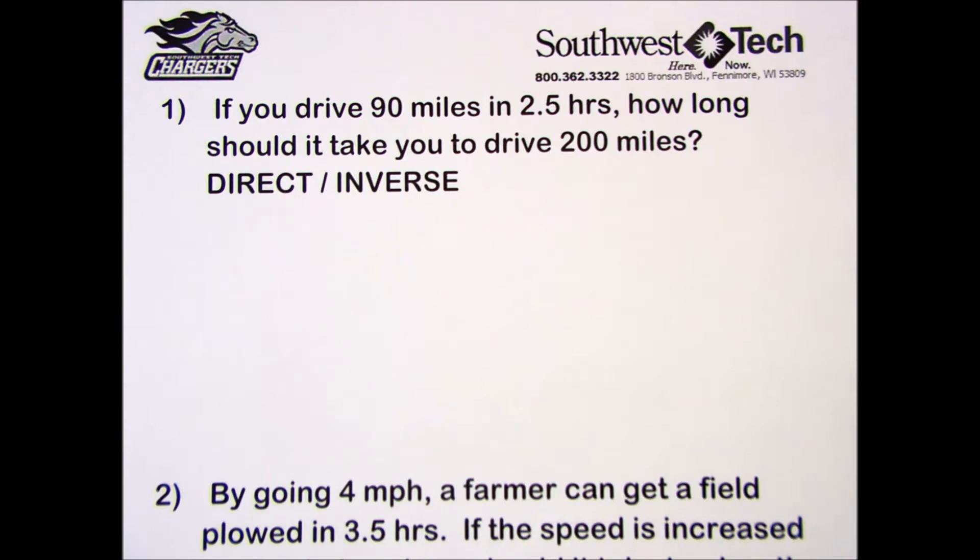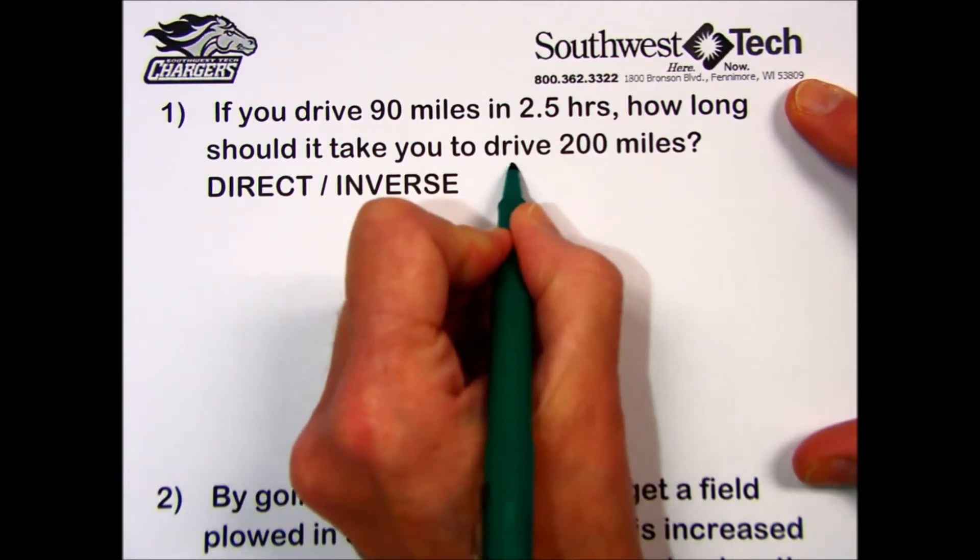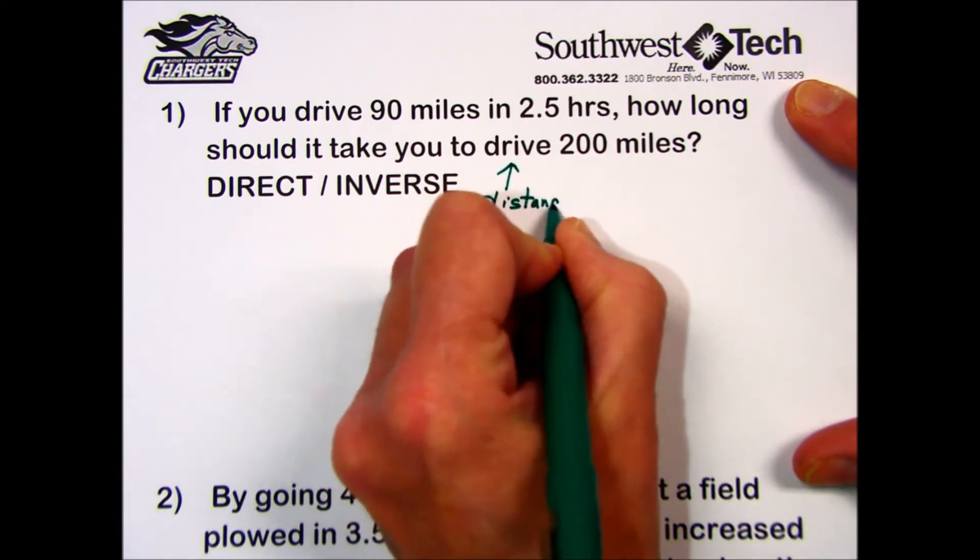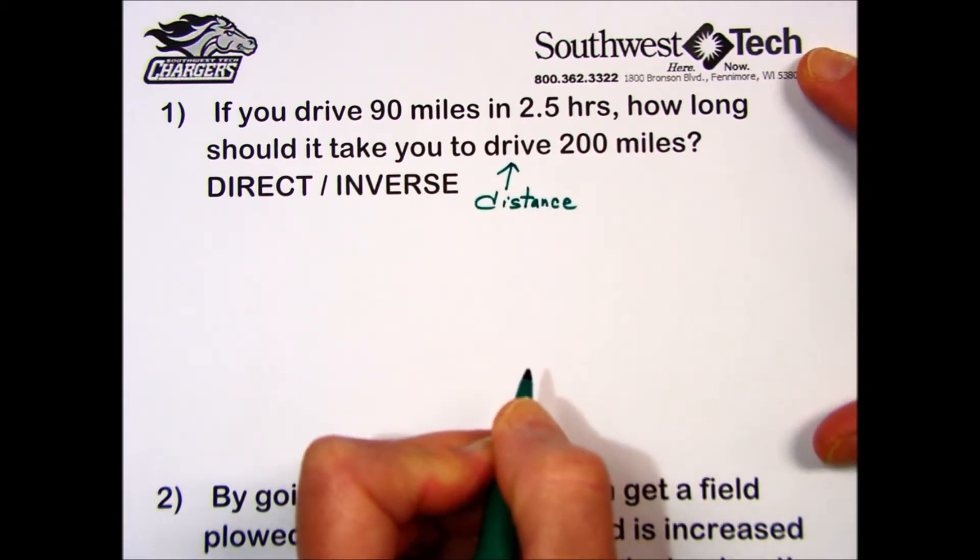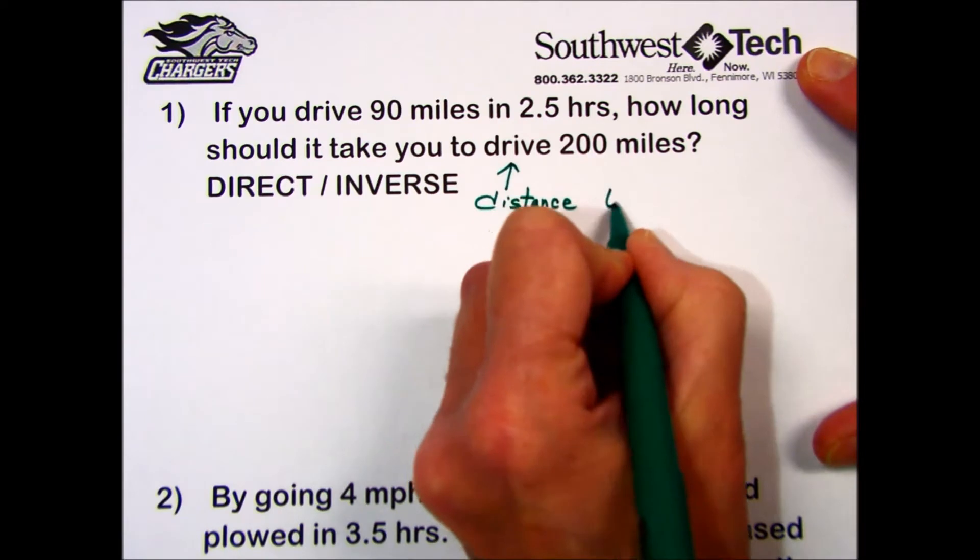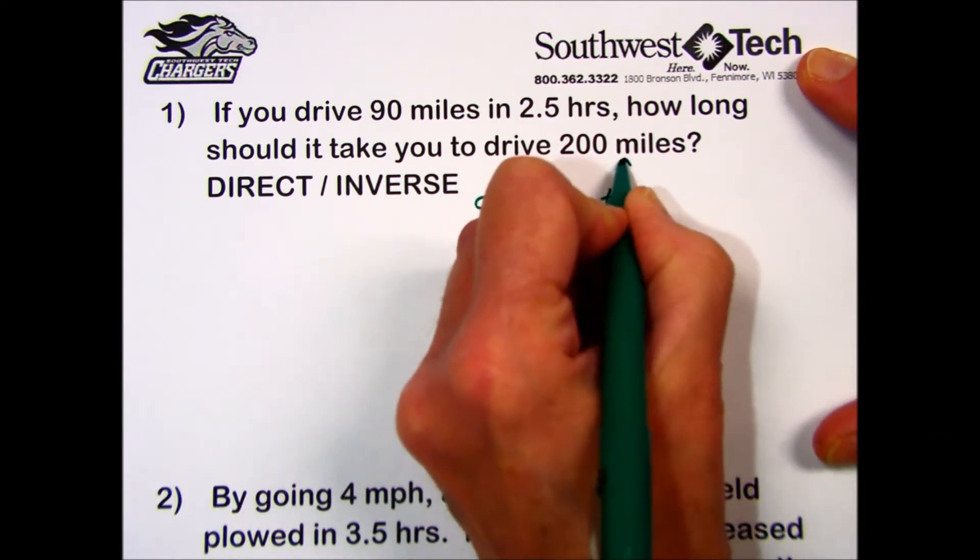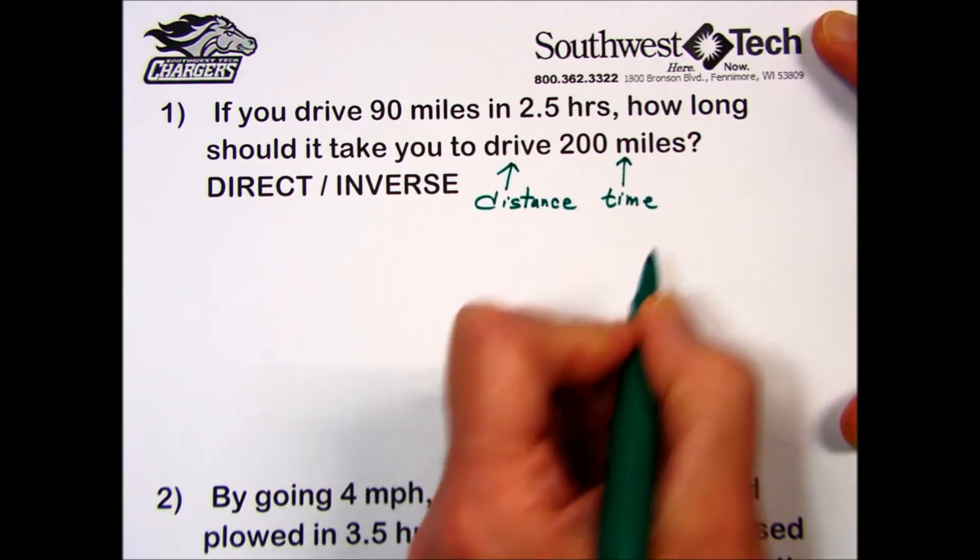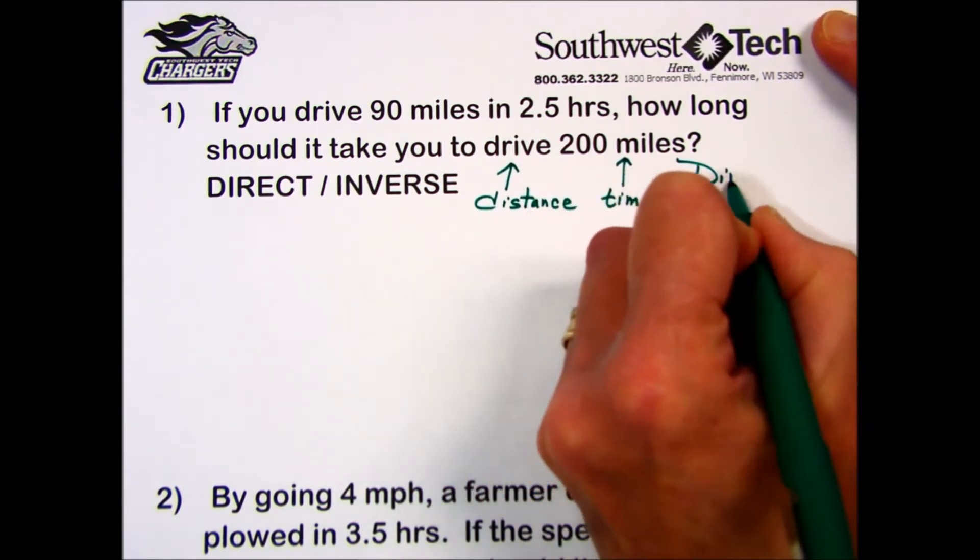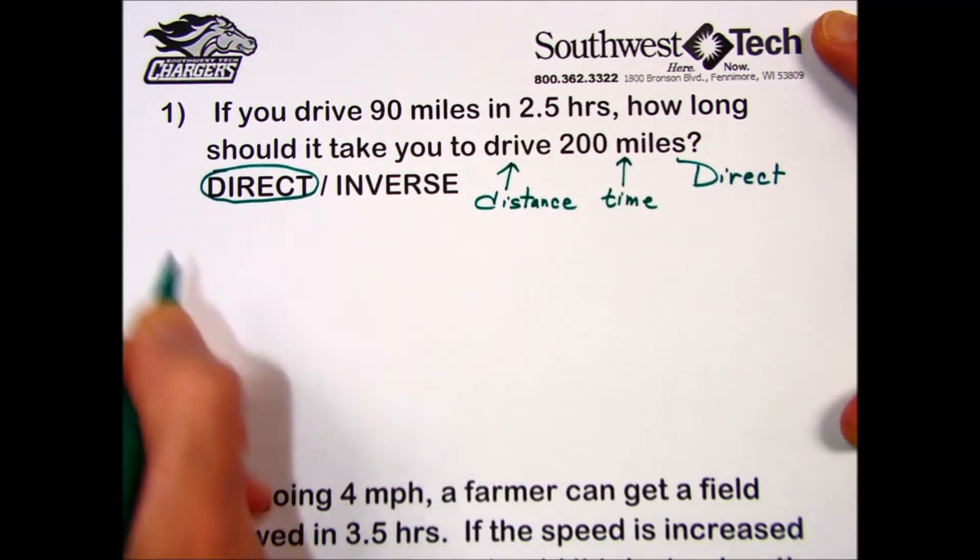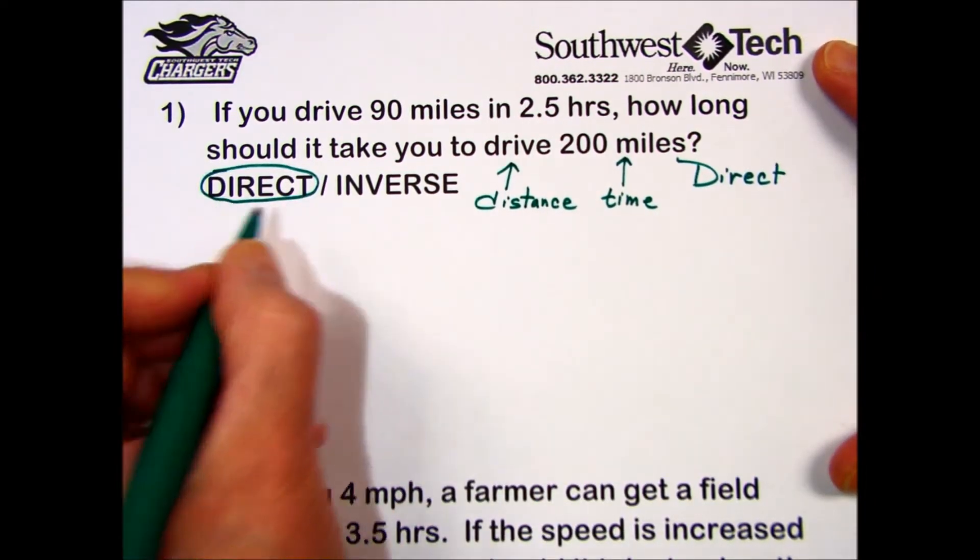If you drive 90 miles in 2.5 hours, how long should it take you to drive 200 miles? We're talking about a distance increasing, going from 90 miles up to 200 miles, and then the time. The longer the distance, the longer the time. Because both quantities are increasing, we're going to determine that this is a direct proportion.